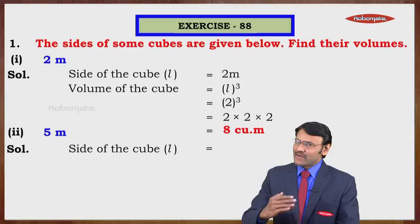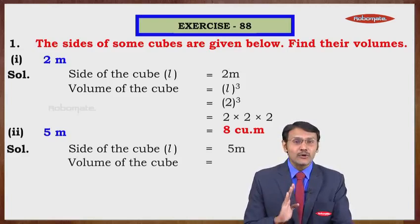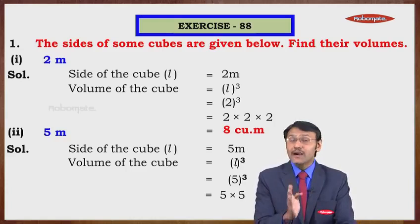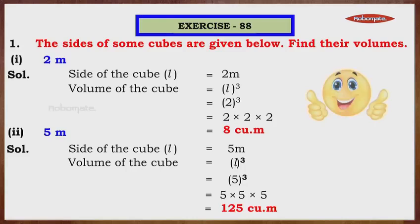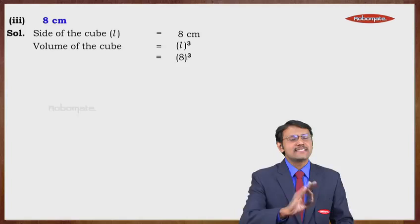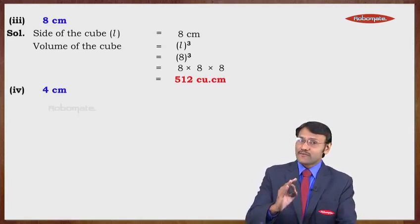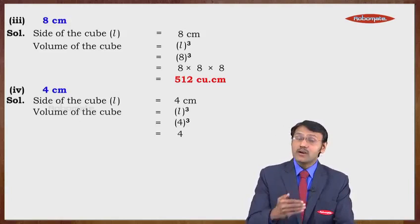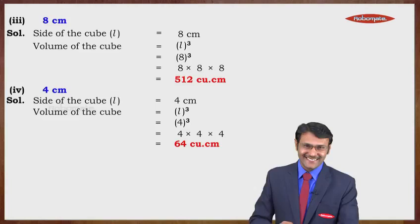One more example: where side is 5 meters, volume = L³ = 5³ = 5 × 5 × 5 = 125 cubic meters. Next, if side is 8 centimeters, volume = 8 × 8 × 8 = 512 cubic centimeters. And if side is 4 centimeters, volume = 4³ = 4 × 4 × 4 = 64 cubic centimeters.